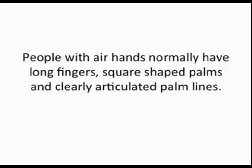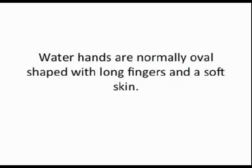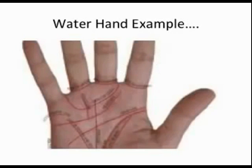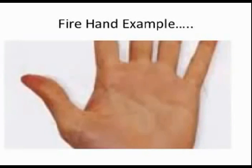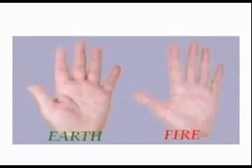People with air hands normally have really long fingers, square-shaped palms, and very clearly articulated palm lines. Water hands are normally oval-shaped with long fingers and soft skin. Those with fire hands have shorter fingers, longer palms, and well-defined, clear skin. People with earth hands are generally modest, water hands represent sensitivity, fire hands will represent confidence, while air hands are found in very sociable individuals.